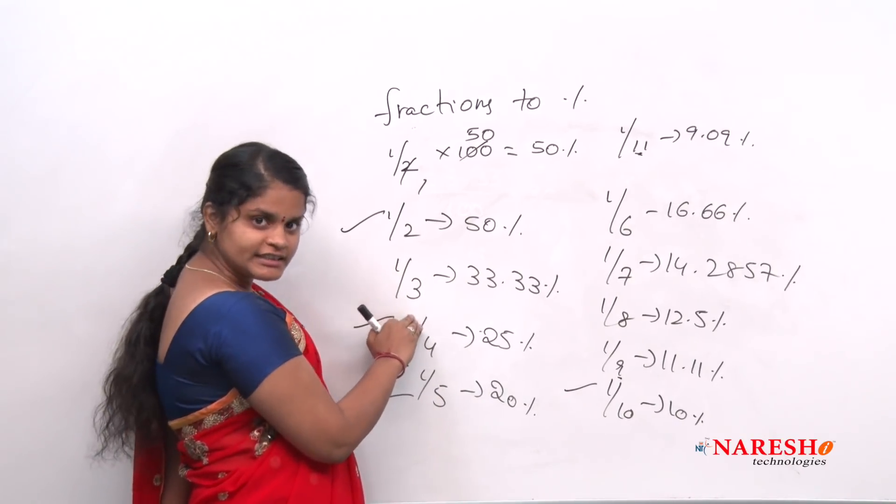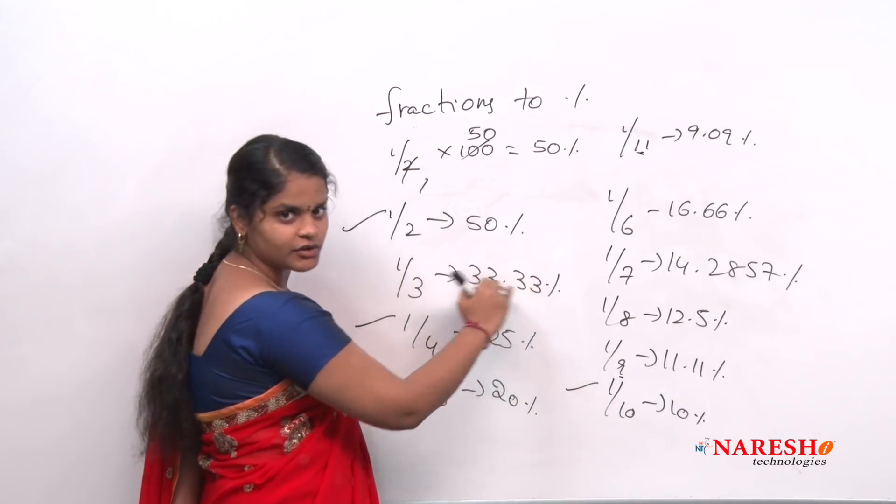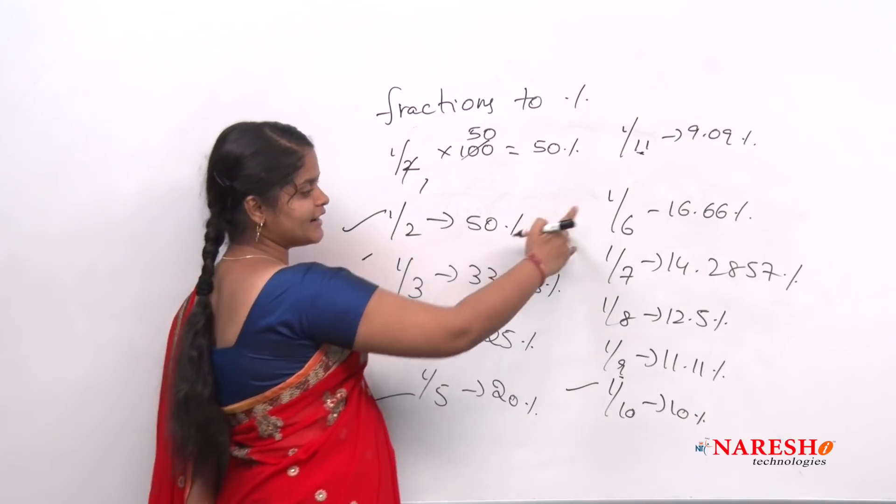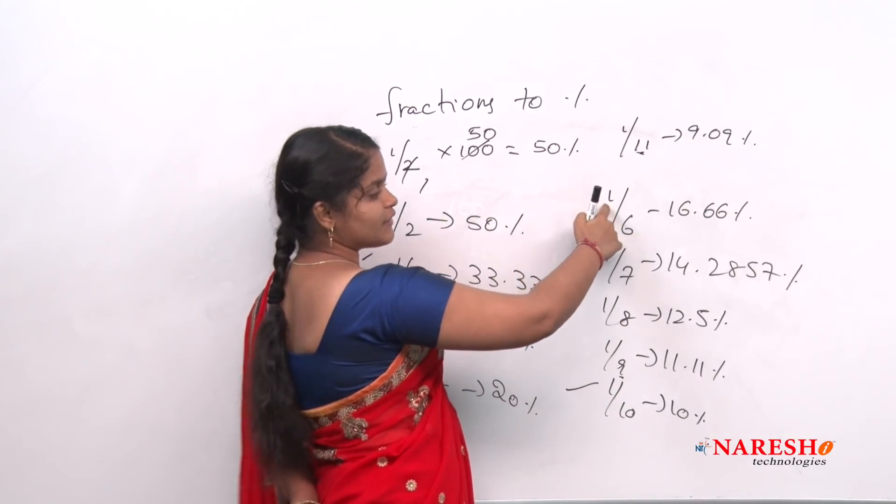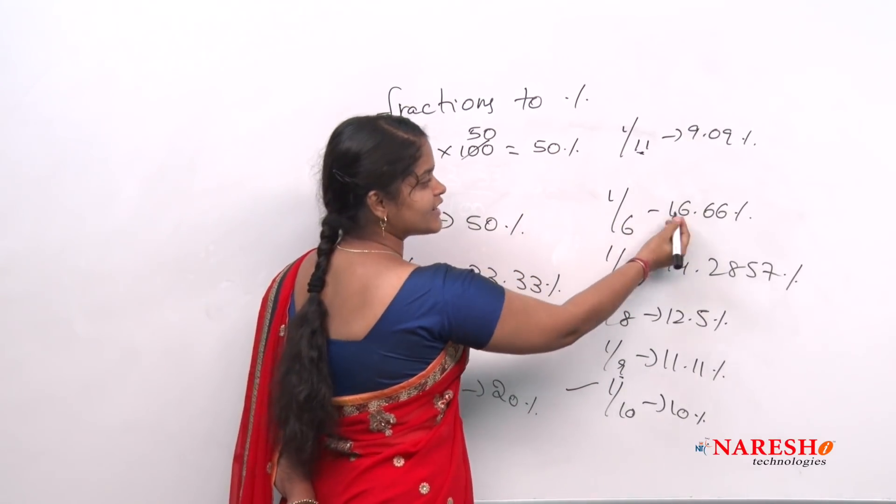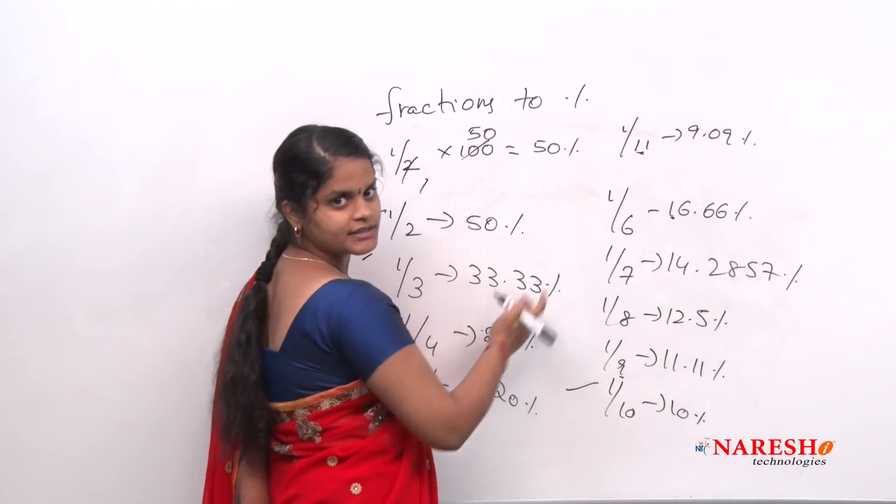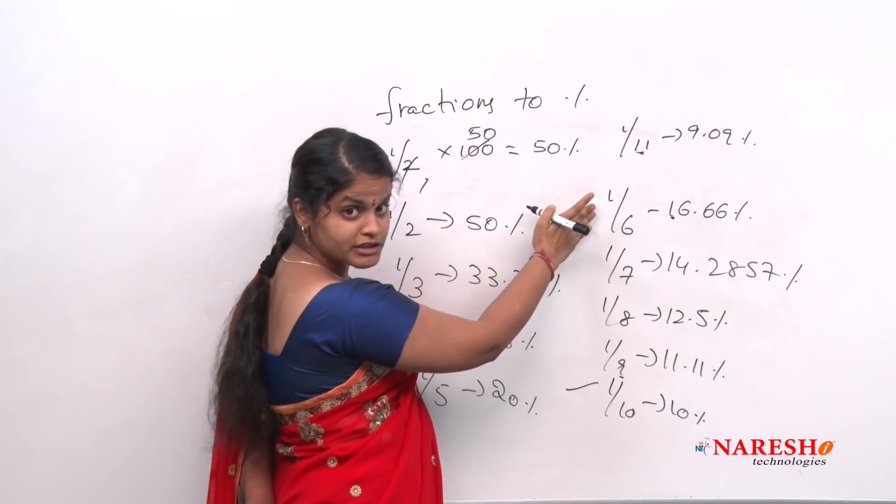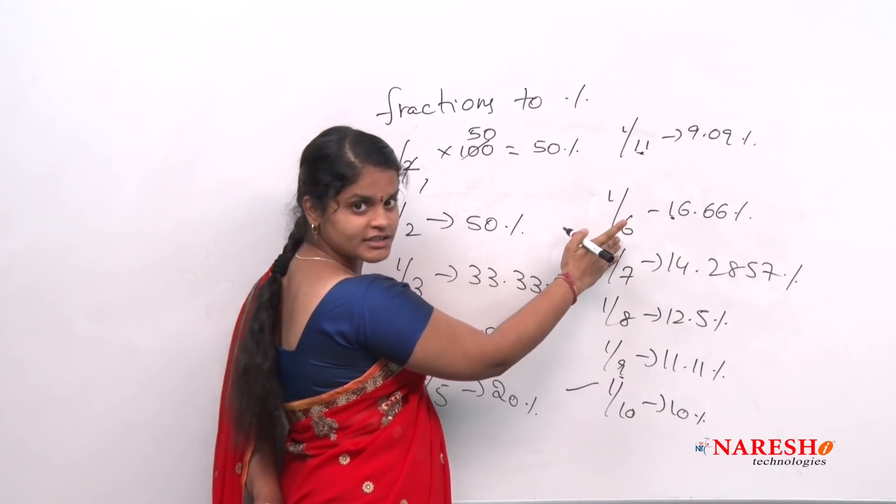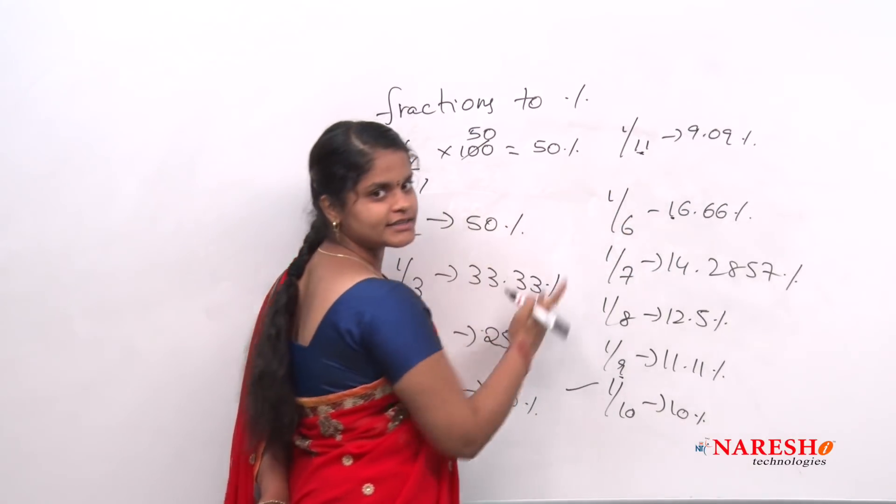And 1/3, you will get 33.33, only 3s. And 6. See, 1/6, you will get all 6 except first one is 1. See, 16.66. You can remember like numerator 1 and denominator 6, 16.66.